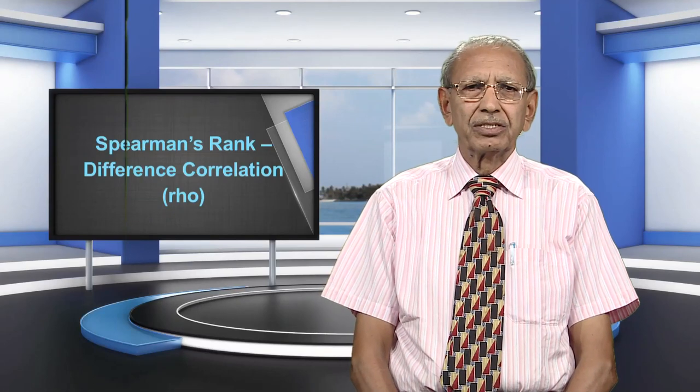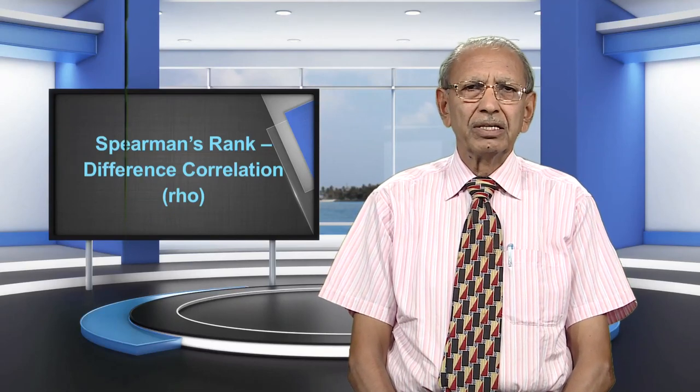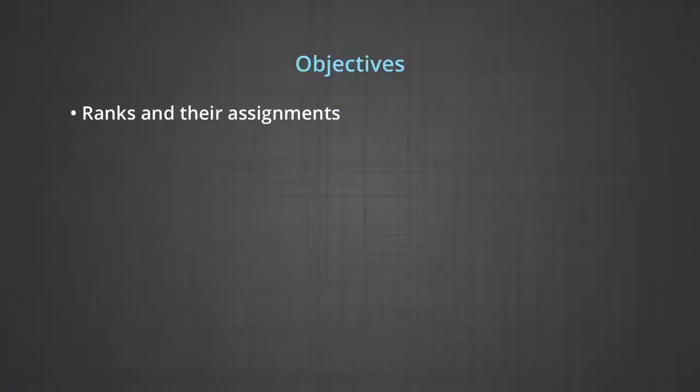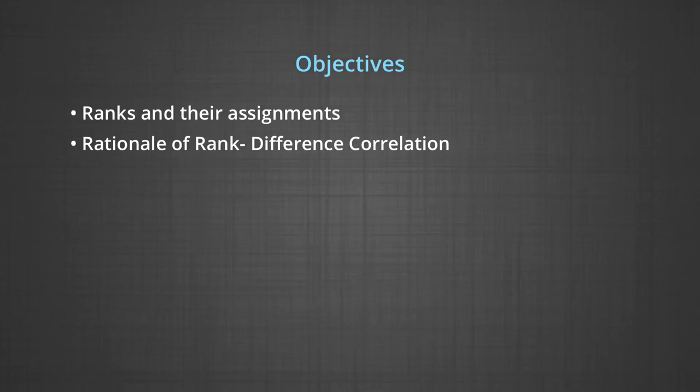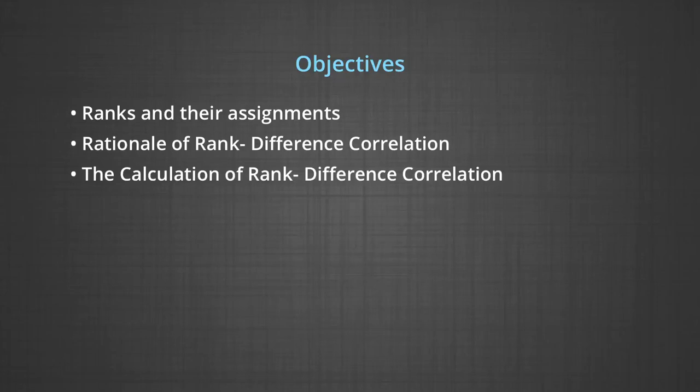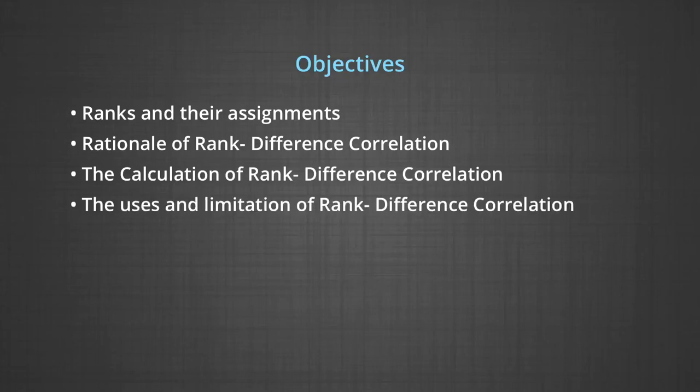The objectives of the module are the following: ranks and their assignment; understanding the rationale of rank difference correlation; understanding the calculation of rank difference correlation; and understanding the uses and limitations of rank difference correlation.